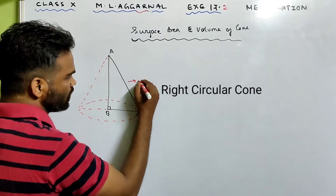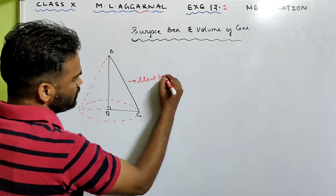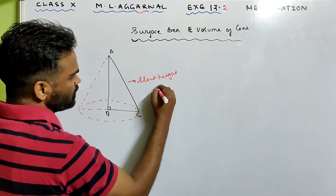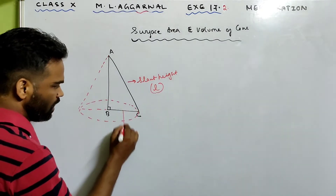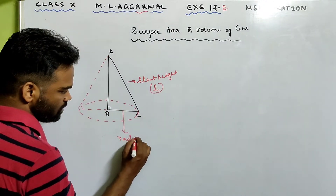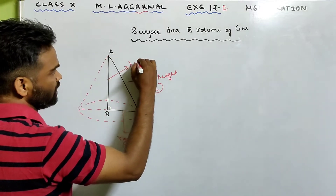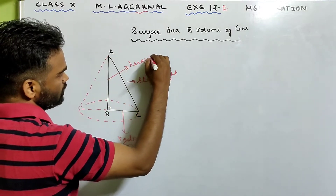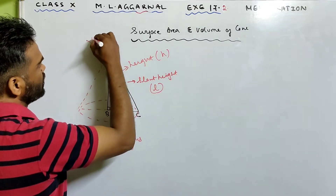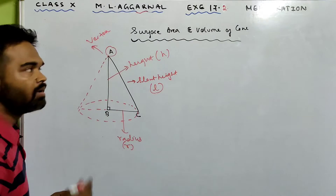This is a cone. The slant height is represented by L. BC over here is the radius of the cone, which is R. AB is the height, which is known as h. A is the vertex.